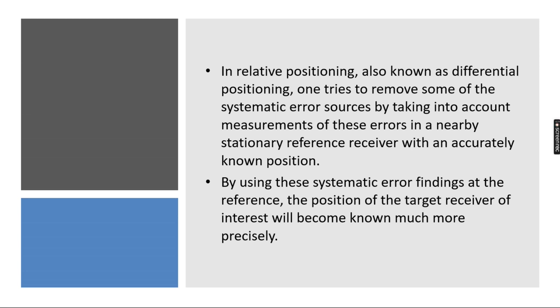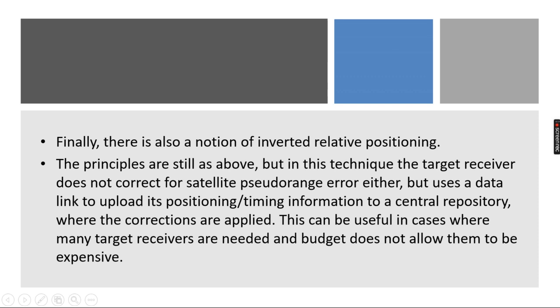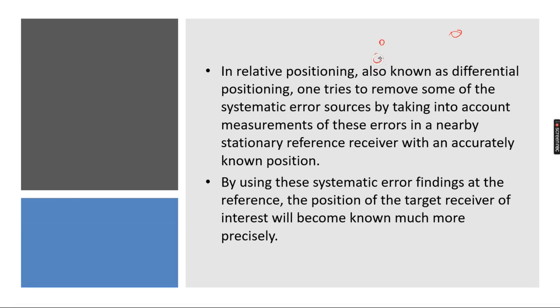In relative positioning, also known as differential positioning, one tries to remove some of the systematic error sources by taking into account the measurement of these errors in nearby stationary reference receivers with accurately known positions. This means suppose we know that there are some ground control points with accurately known values. Using these ground control points, we can find out the value of other points using this relative positioning technique.